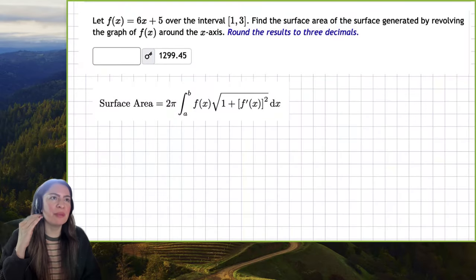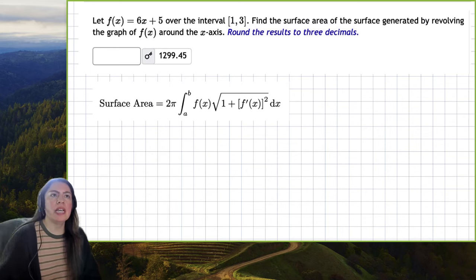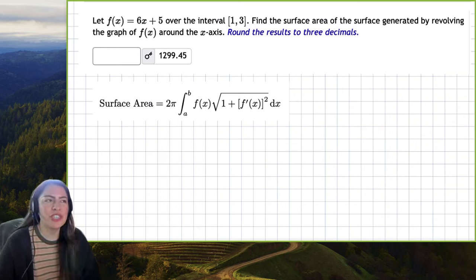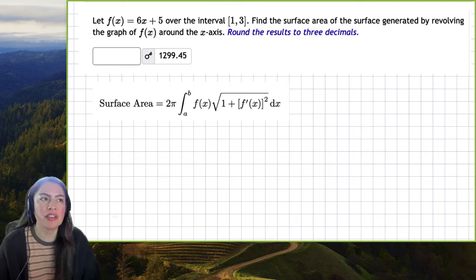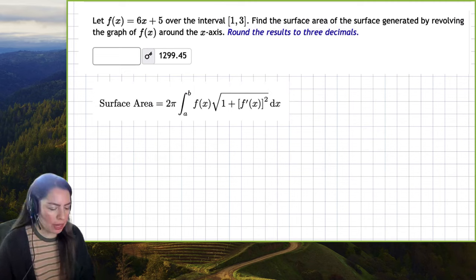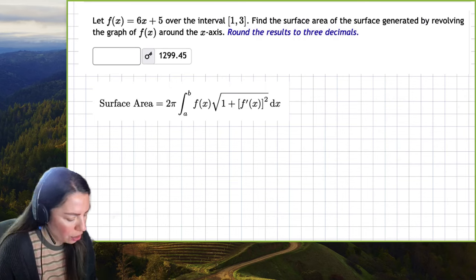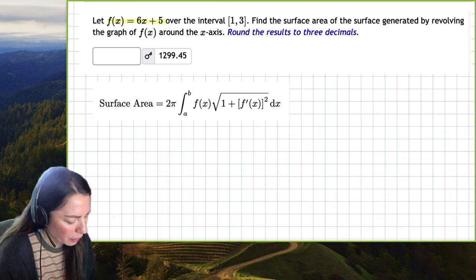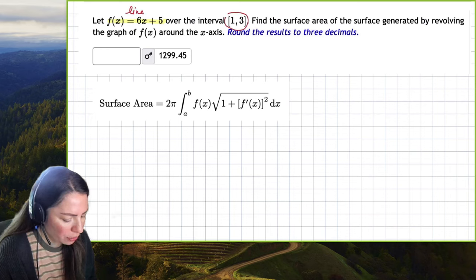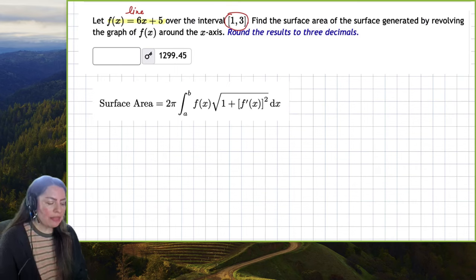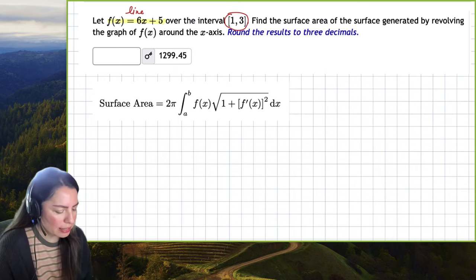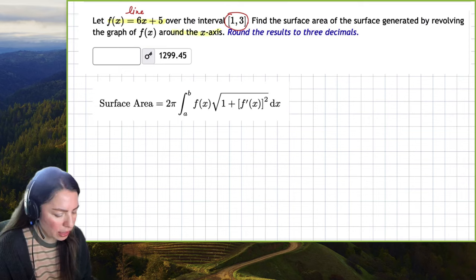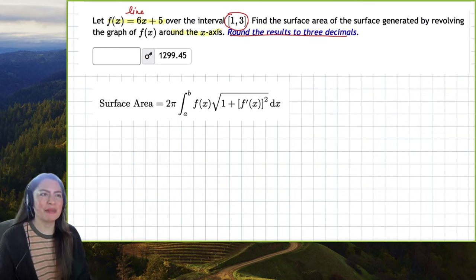Hi! So in this example we're going to find the surface of a revolution around the x-axis given a function. We can see right away that the function is a line over this particular interval, and then we're going to revolve it around the x-axis.